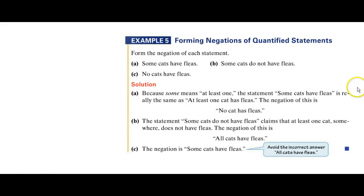For example five, 'some cats have fleas' - 'some' means at least one, so the negation is 'no cats have fleas.' 'Some cats do not have fleas' - for the negation of B, it would be 'all cats have fleas.' In letter C, 'no cats have fleas.' The negation of this - you might tend to say 'all cats have fleas' - the proper negation would be 'some cats have fleas.' You can put a little star by that. Don't make that wrong selection.